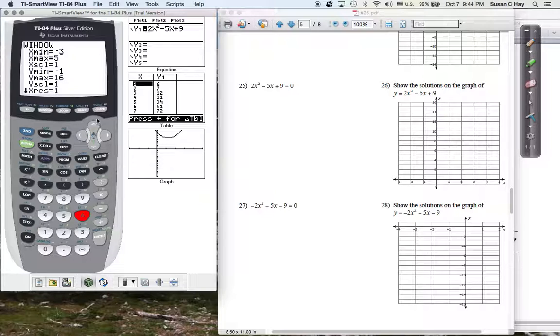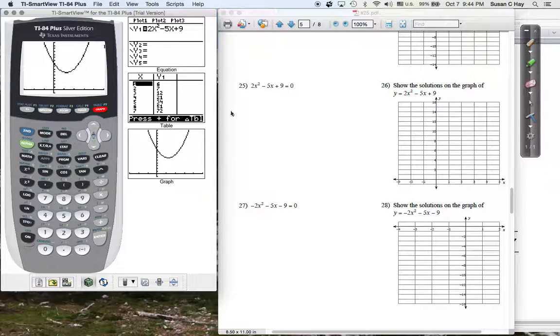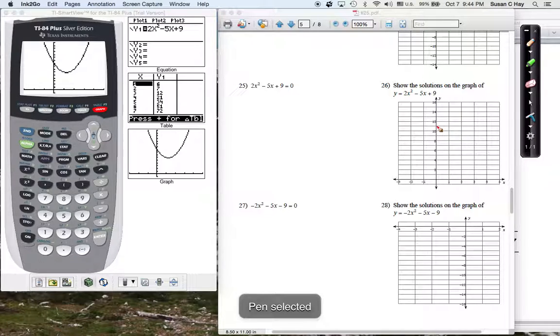So now when I hit graph, that's why I set my window to look like the graph that you're given from negative 3 to 5 and from negative 1 to 16 on the y. So hit graph. It should look very much like, although it doesn't have little grid lines in it. So all you're going to do now is just try to sketch this graph.